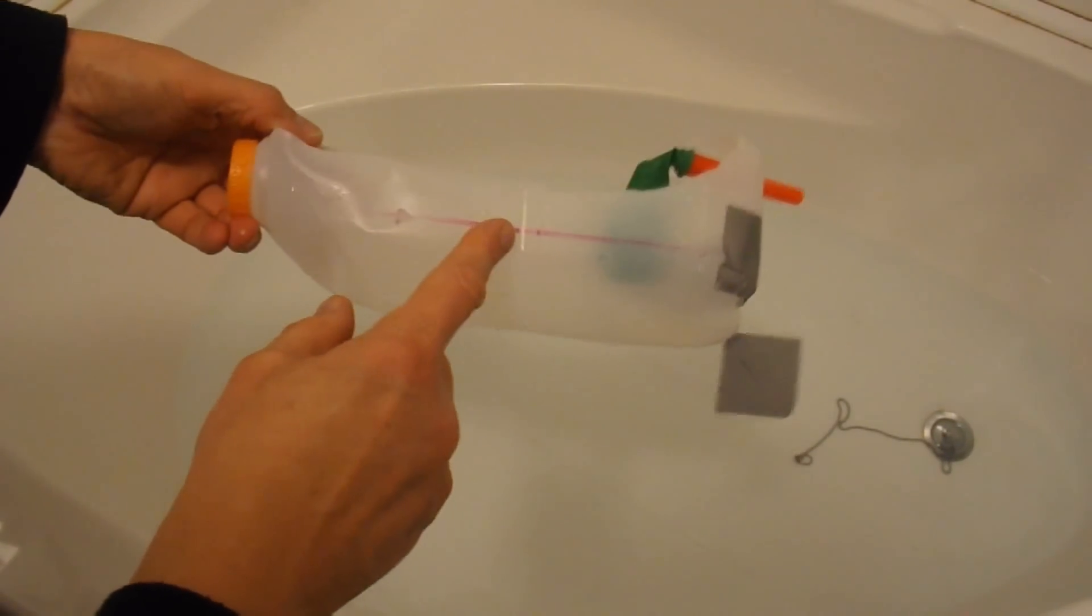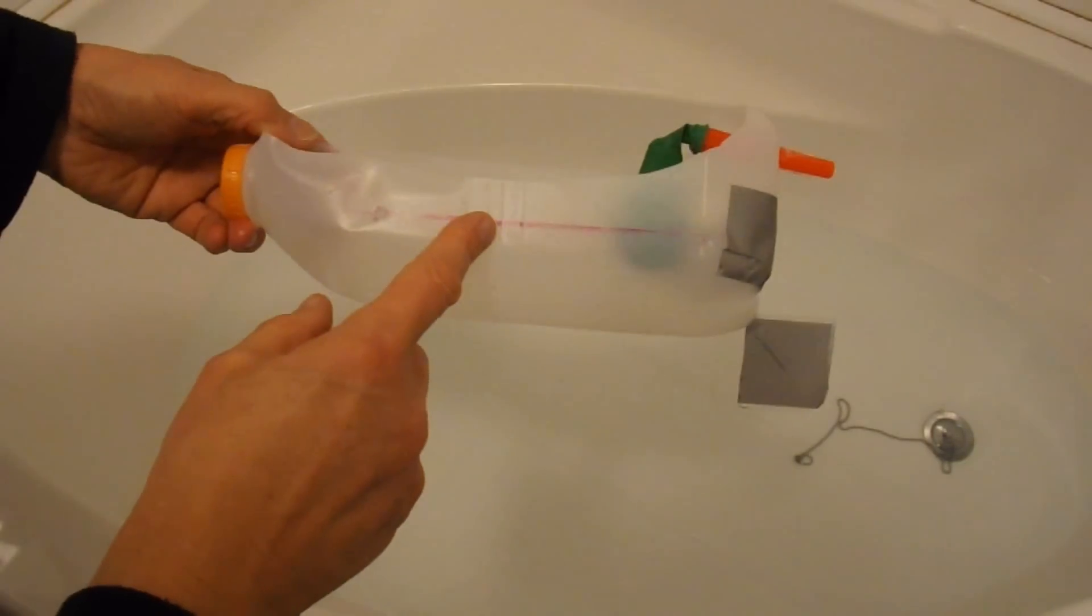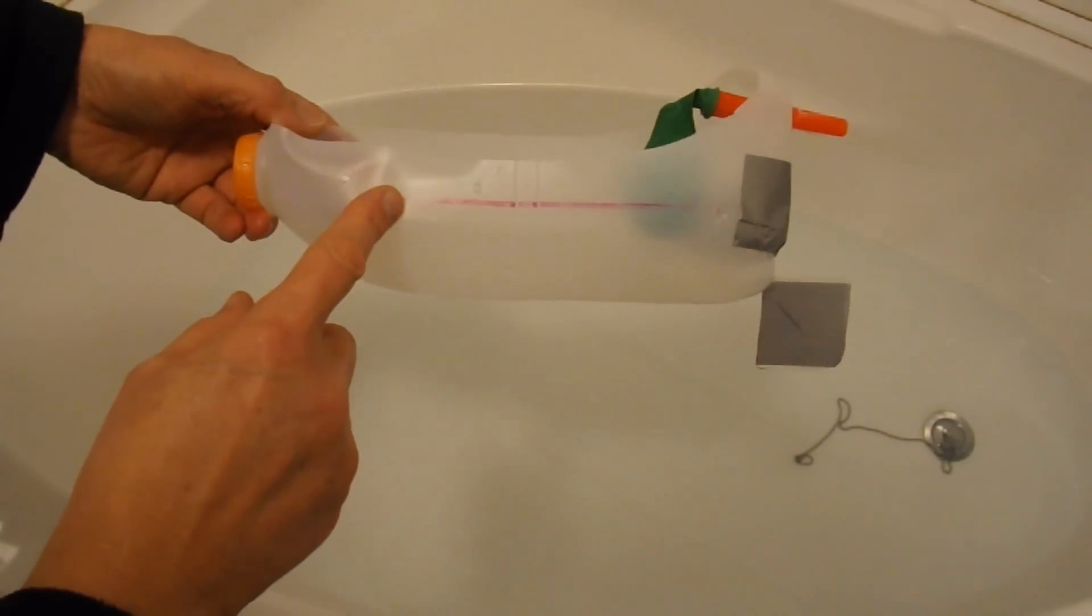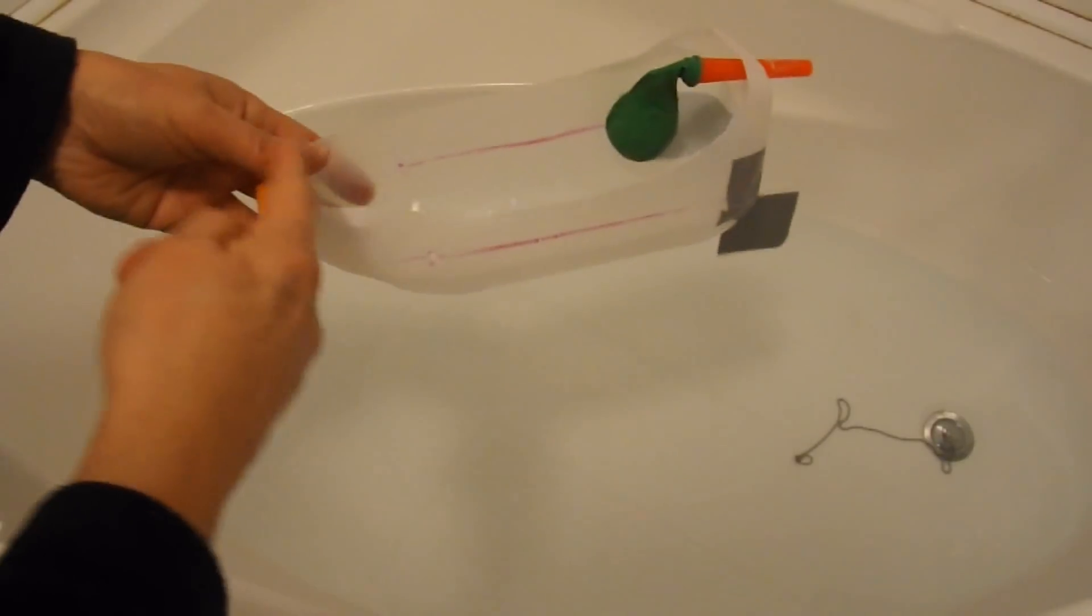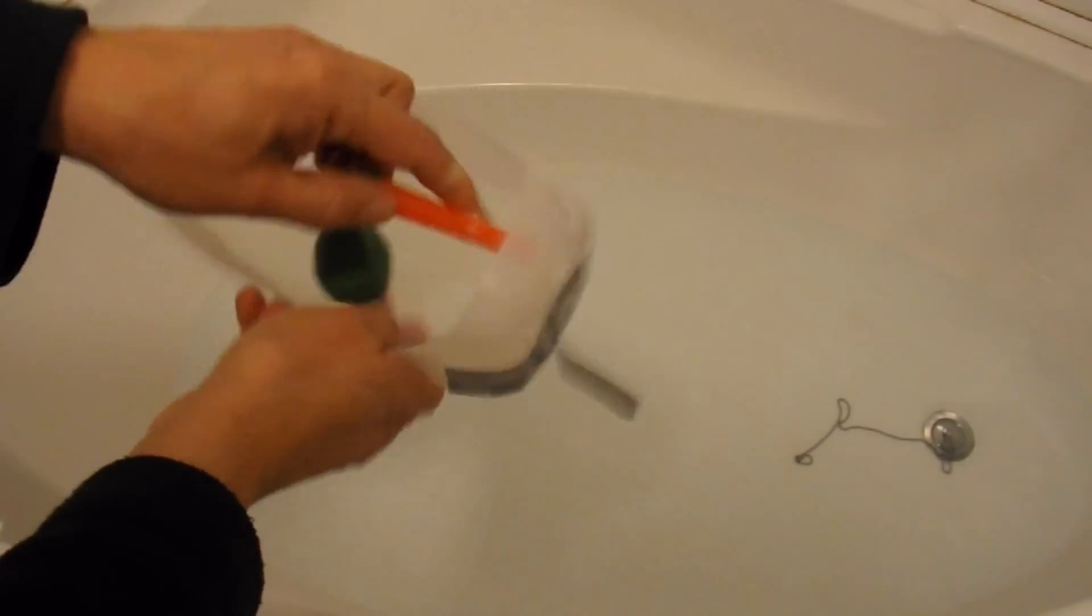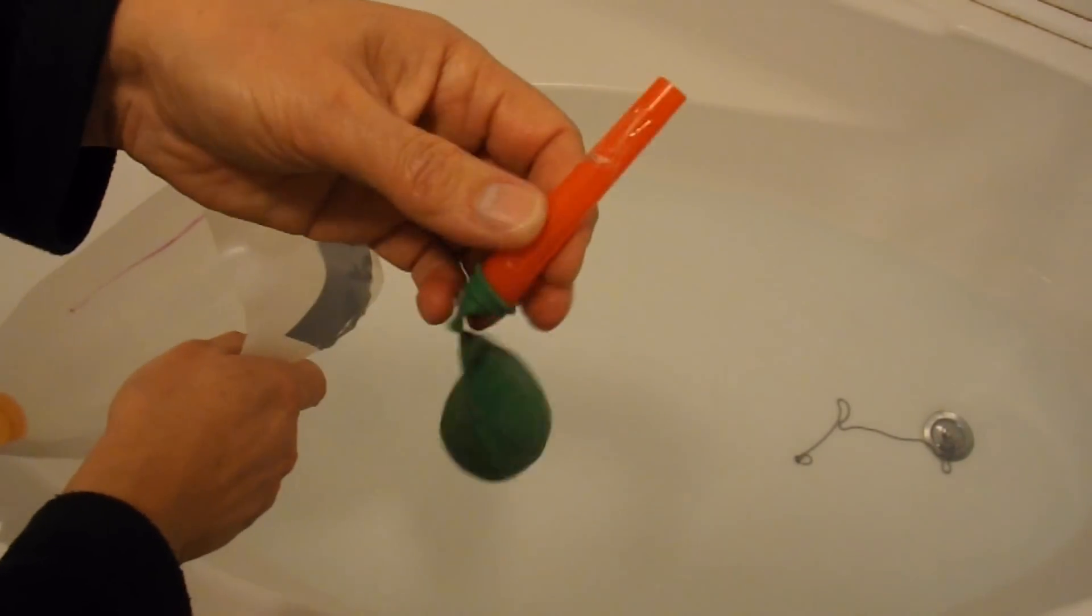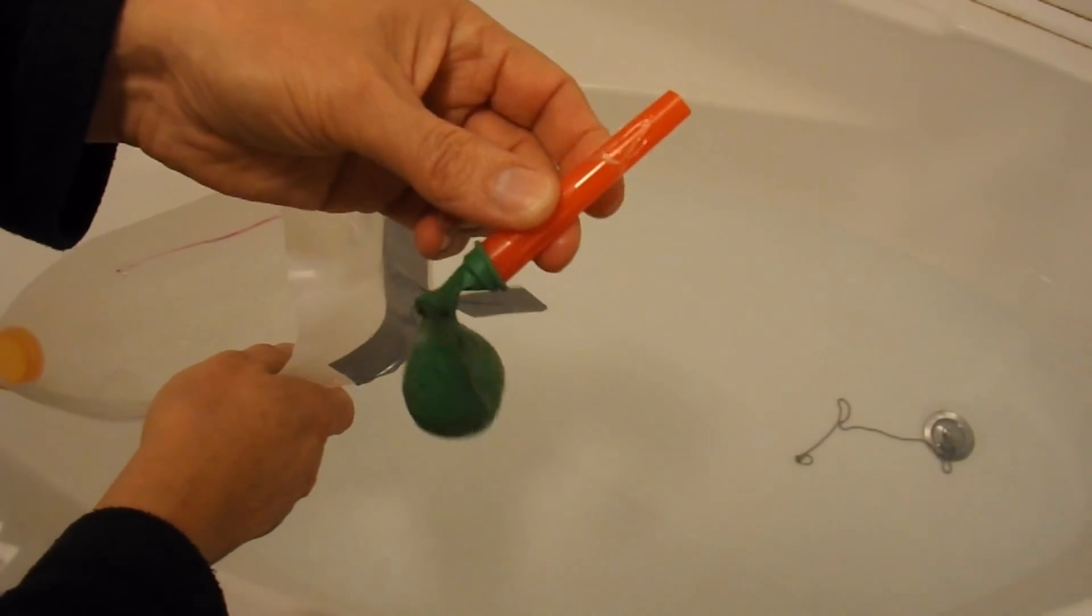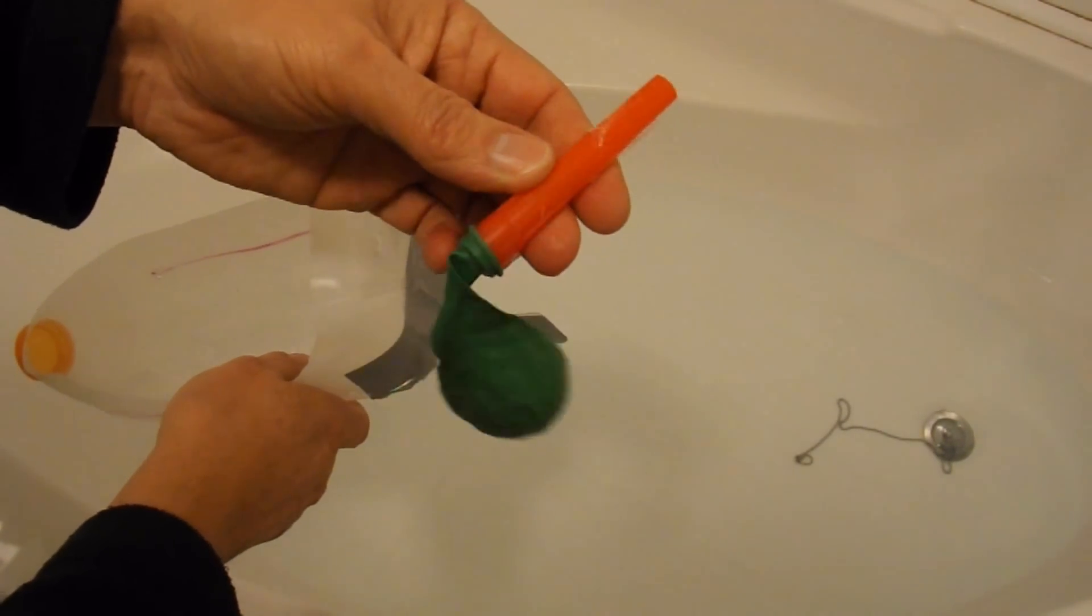Plastic milk jug, carton, bottle, whatever you want to call this sort of thing. This is actually a four pint one. Cut most of the top away so you've got access inside. The balloon is stuck on the end of a plastic tube. You may want to experiment with the size of tube to get the best result.